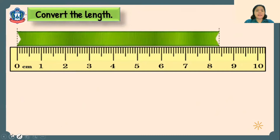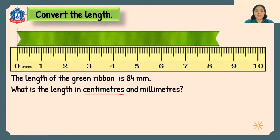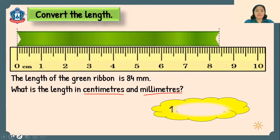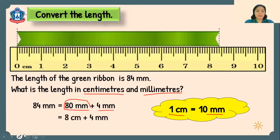Next, this is a green ribbon. The length of the green ribbon is 84 millimeters. What is the length using both centimeters and millimeters? So 84 millimeters equals 80 millimeters plus 4 millimeters. Let's convert the 80 millimeters to centimeters by dividing by 10. Remember, 1 cm is 10 mm. So 80 divided by 10 equals 8. That gives us 8 centimeters and 4 millimeters. So the answer is 8 centimeters, 4 millimeters.